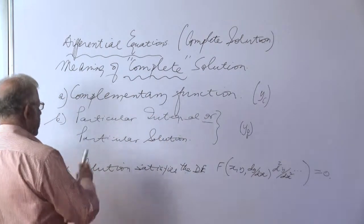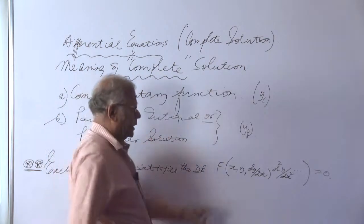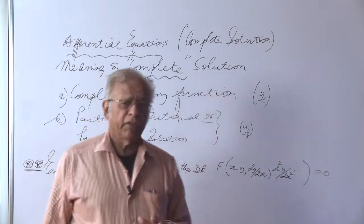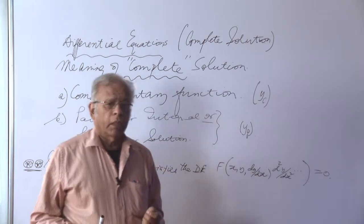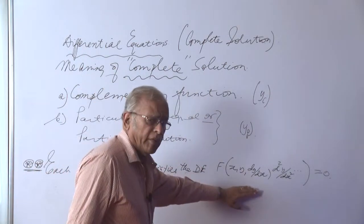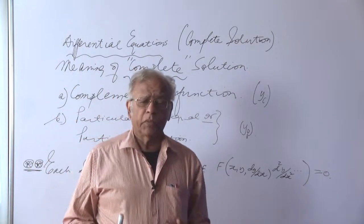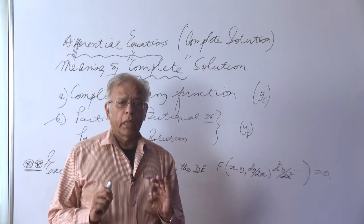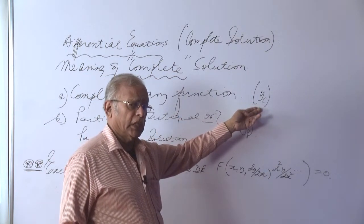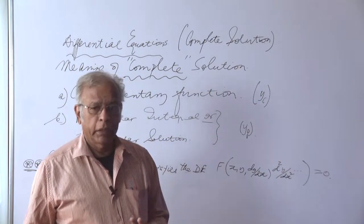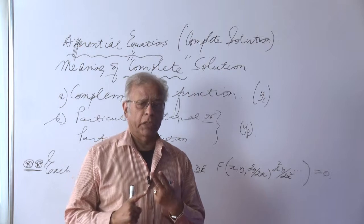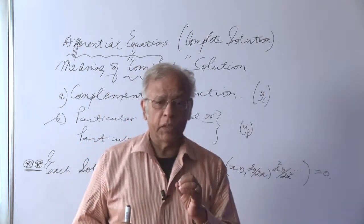The next class of solutions is called the particular integral or particular solution, denoted by y_p. There are various methods of finding particular solutions, but if we find even by trial and error that a particular function satisfies the differential equation, then that is a particular solution — provided we don't include any arbitrary constant in that solution. A particular solution is essentially bereft of any arbitrary constants; it might have a term like 2/3, but no arbitrary constants.